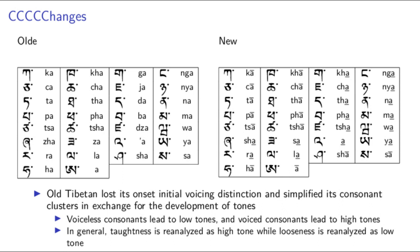The same idea applies to the end of tones too. Consonants at the end of syllables can cause the preceding vowels to raise or lower, and this is what leads to tone contours. The evolution of tones in Tibetan is pretty textbook. Tibetan specifically lost its initial consonant-voicing distinction and its consonant clusters, and exchanged these for tones. Generally, Tibetan voiced consonants were reanalyzed as low tones, and unvoiced consonants were reanalyzed as high tones.